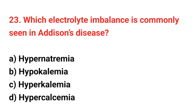Question number 23: Which electrolyte imbalance is commonly seen in Addison's disease? The right answer is option C: Hyperkalemia.